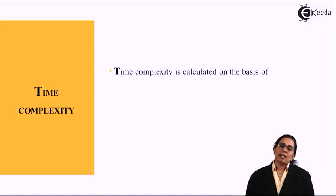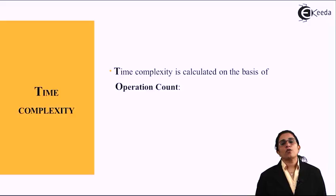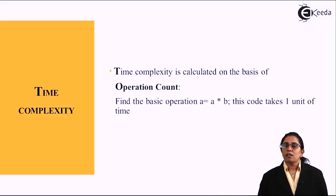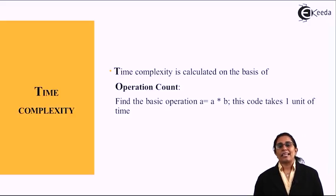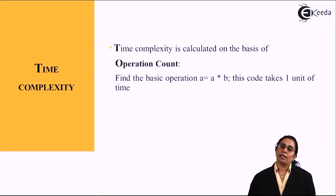Time complexity is calculated on the basis of, first one is operation count, that is the number of operations it has. Find the basic operation such as a equals a into b. This code takes one unit of time.